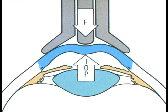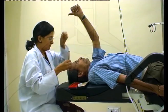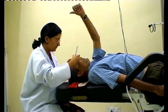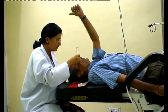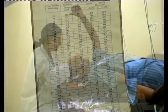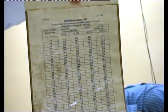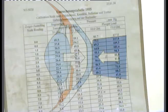Schiotz's tonometer displaces a large volume of fluid and hence scleral rigidity affects results significantly. As a result, the amount of fluid displaced is variable and unpredictable, which gives inconsistent results and hence requires conversion tables based on empirical data. In aplanation tonometry, the shape of deformation is simple flattening and is constant. Therefore, the relationship of intraocular pressure can be derived from mathematical calculations.